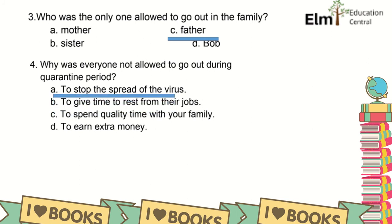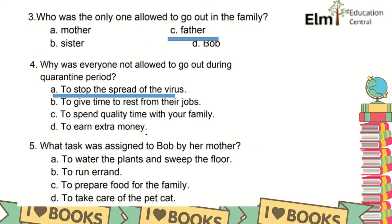And the last question: What task was assigned to Bob by his mother? A. To water the plants and sweep the floor. B. To run around. C. To prepare food for the family. Or letter D, to take care of the pet cat. That's right. It is to take care of the pet cat.